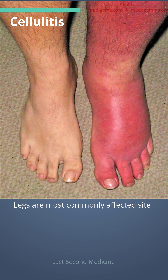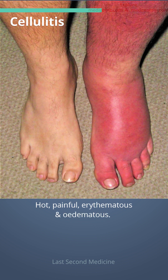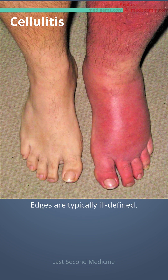The legs are most often affected. The patient usually has malaise, fever, and leukocytosis. The affected site is hot, painful, erythematous, and edematous. Cellulitis edges are typically ill-defined. Regional lymphadenopathy is common.